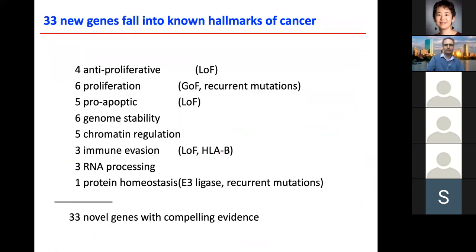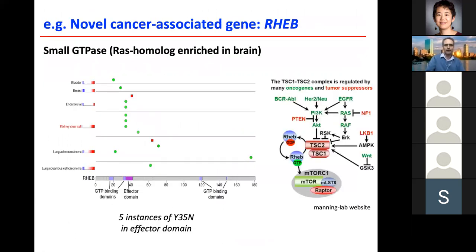Indeed, we found these 33 new cancer genes. One example is REB, which is downstream of the AKT pathway, related to mTOR.